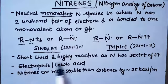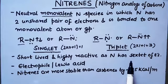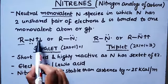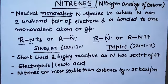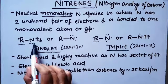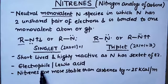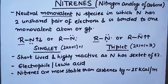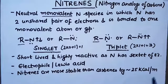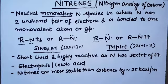Carbenes are short-lived and highly reactive. In nitrenes, the octet is complete, whereas in carbenes the octet is not complete — only 6 electrons are present on carbon. This is why carbenes are very reactive and electron deficient, behaving as electrophiles and Lewis acids in reactions. Nitrenes are more stable than carbenes by an energy difference of approximately 25 kilocalories per mole.